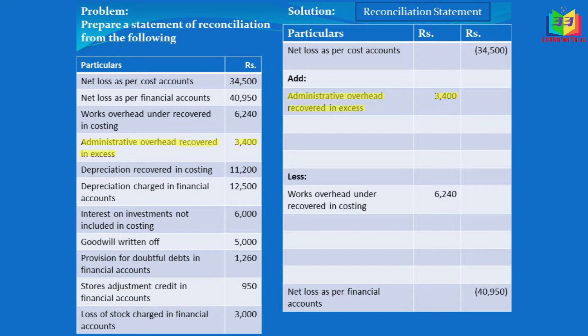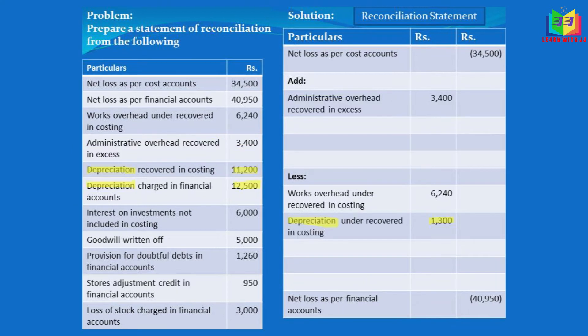The next item is administrative overhead recovered in excess. This is an expense and it is in excess, so this will reduce the profit, and we have to add it here. The next item is depreciation recovered in costing — 11,200 — and depreciation charged in financial account — 12,500.